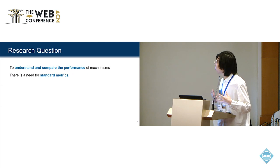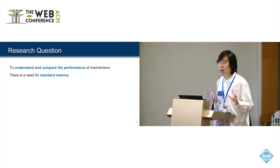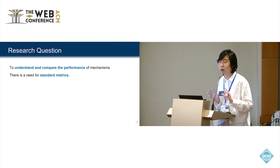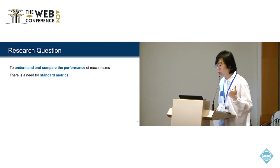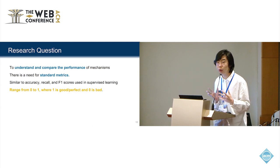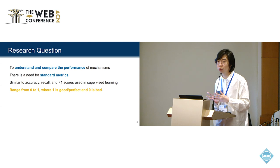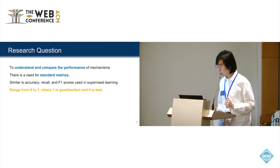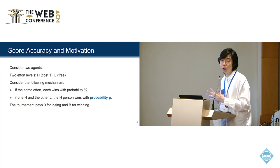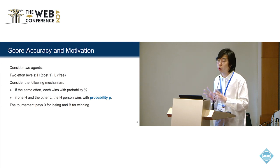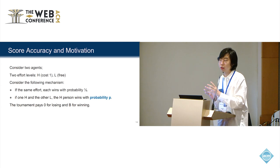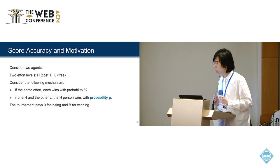We want to propose some standard metric to compare mechanism performance. Generally, we want this standard metric to be interpretable, which means the score should range from zero to one, like accuracy or F1 score in supervised machine learning. Zero means bad, one means good. Here is a toy example to illustrate some intuition. In our paper, we use a more complicated model, but I will skip that. We can talk about that in the poster session.